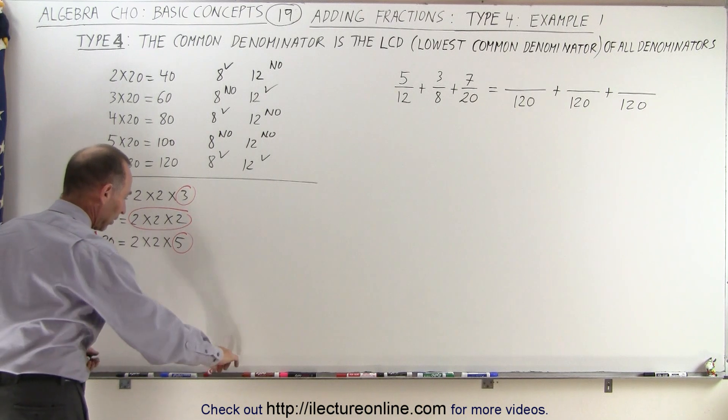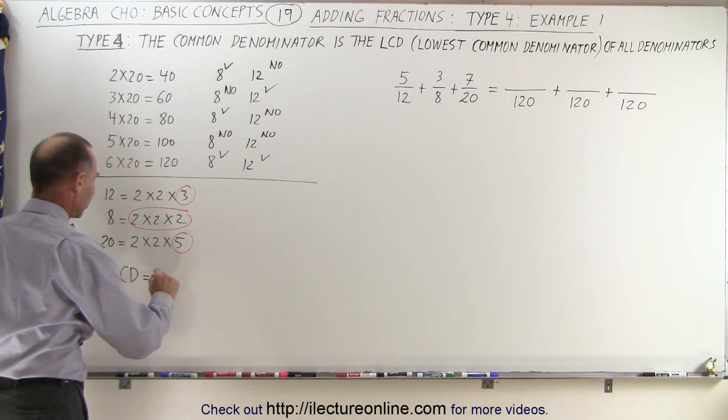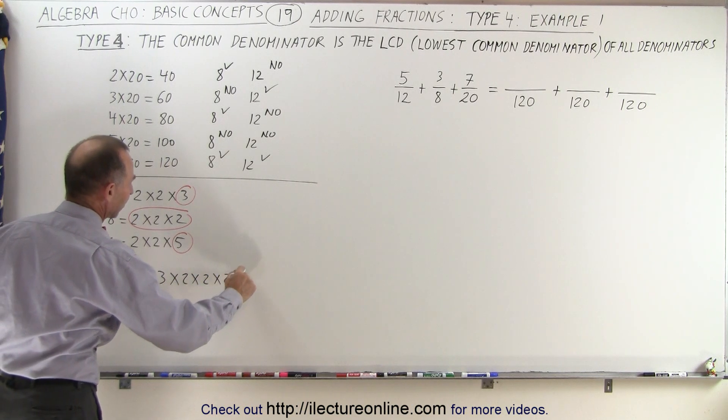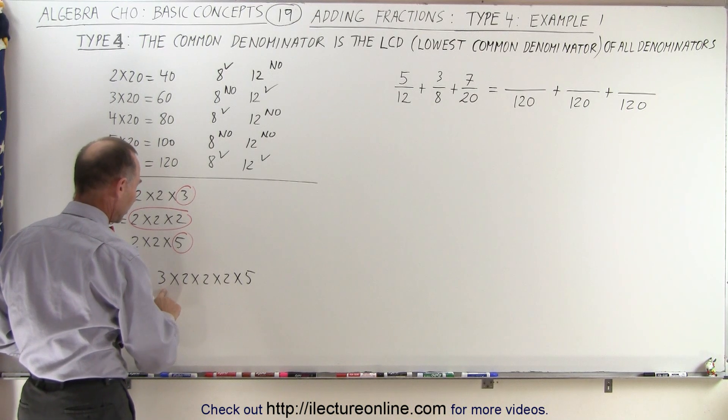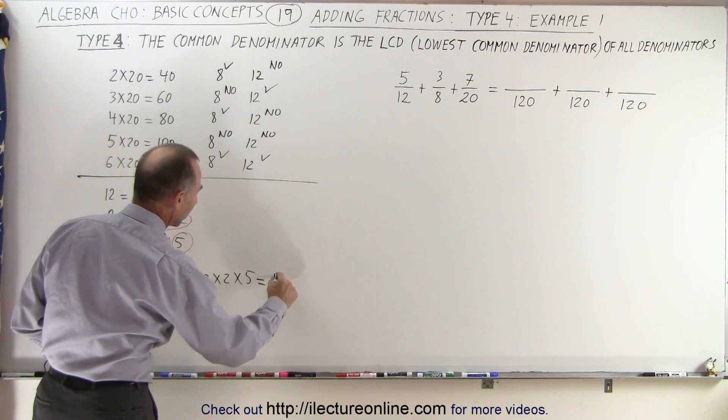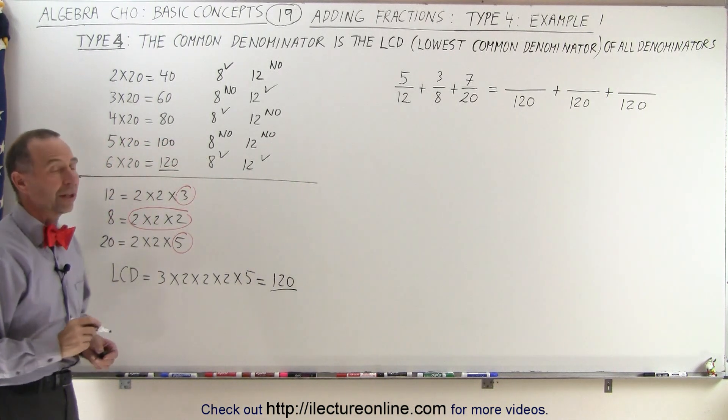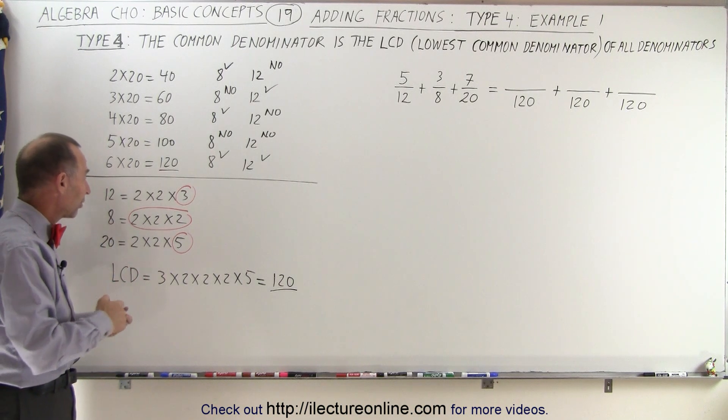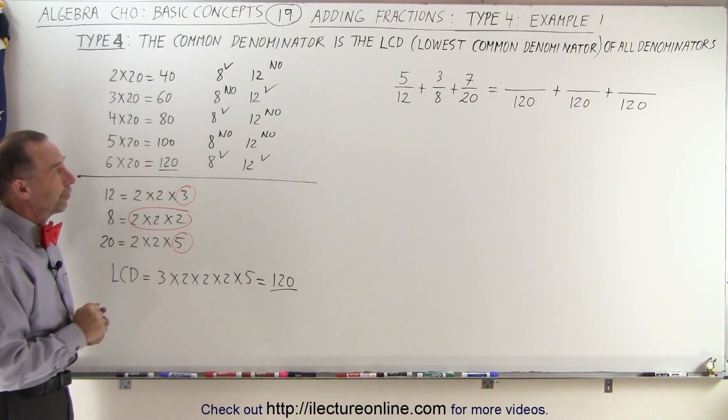Which means that the lowest common denominator is equal to 3 times 2 times 2 times 2 times 5. So 2 times 2 times 2, that's 8 times 3 is 24 times 5 is 120, which of course is the same common denominator that we found there. And so either method works. In this particular case, it looked like this method was a little bit easier and faster, but whatever you prefer.